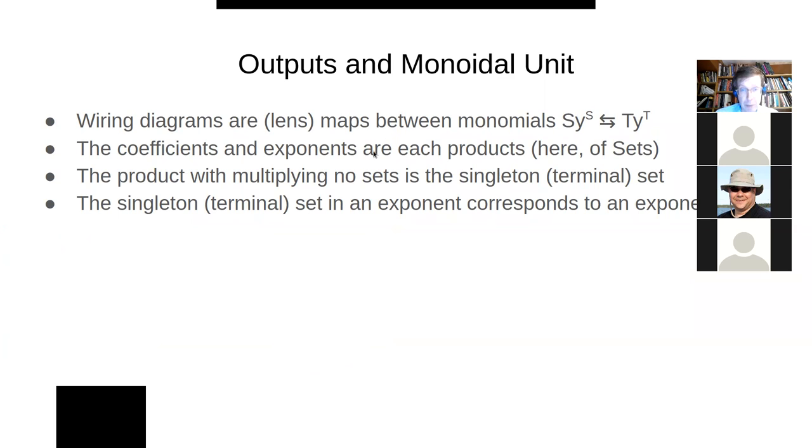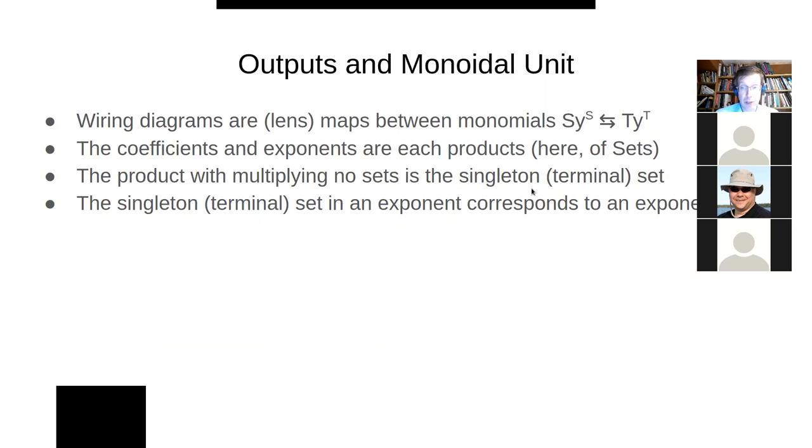coefficients, the exponents here are all products. And when we don't have anything, we use the singleton. That's kind of the terminal set. Multiplying no sets is not the empty set.